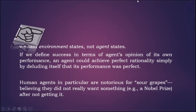Remember: we said environment states, not agent states. If we define success in terms of the agent's opinion of its own performance, an agent could achieve perfect rationality simply by deluding itself that its performance was perfect. Human agents in particular are notorious for this — for example, the story of sour grapes, where a human agent believes they did not really want something after not getting it.